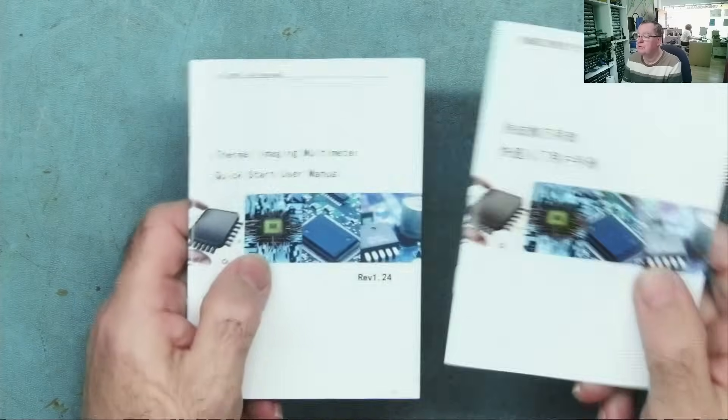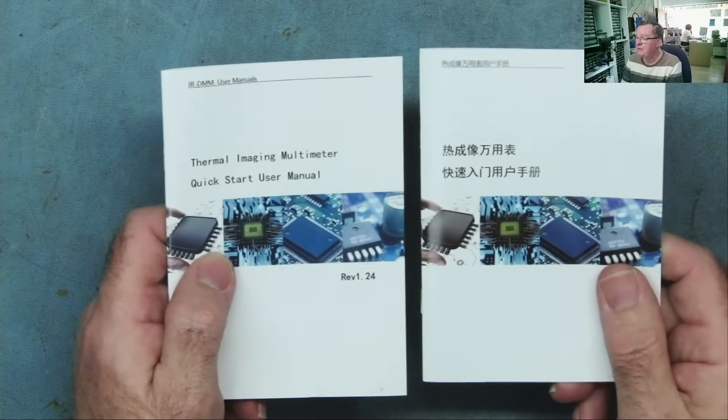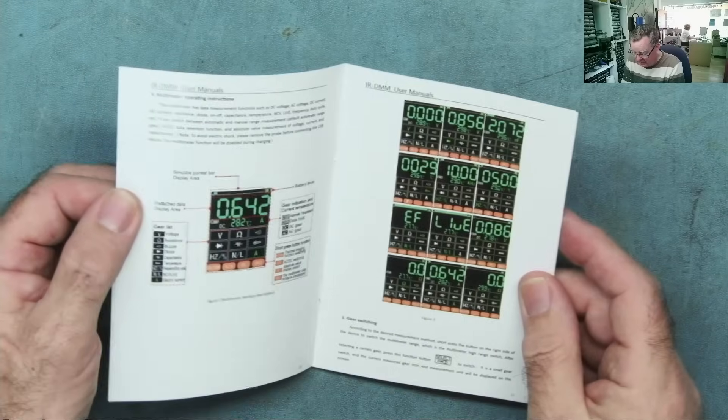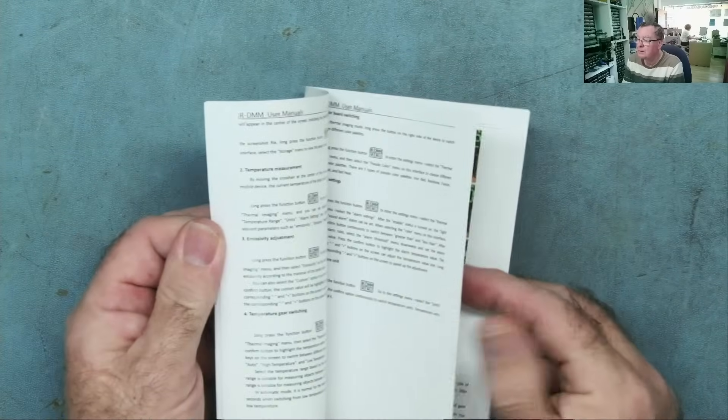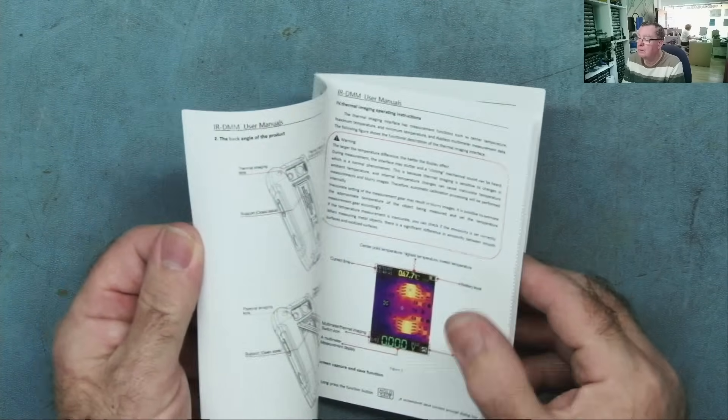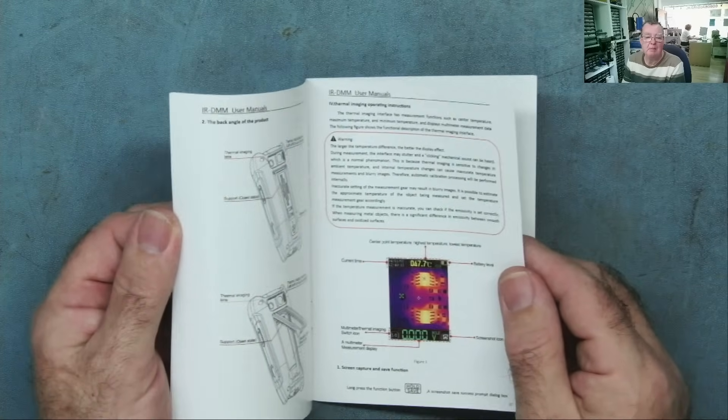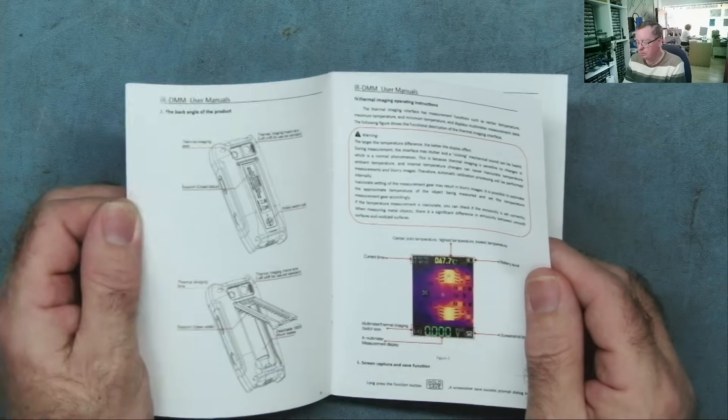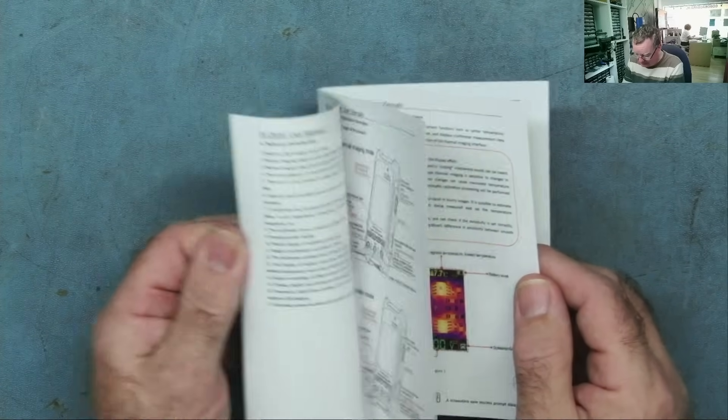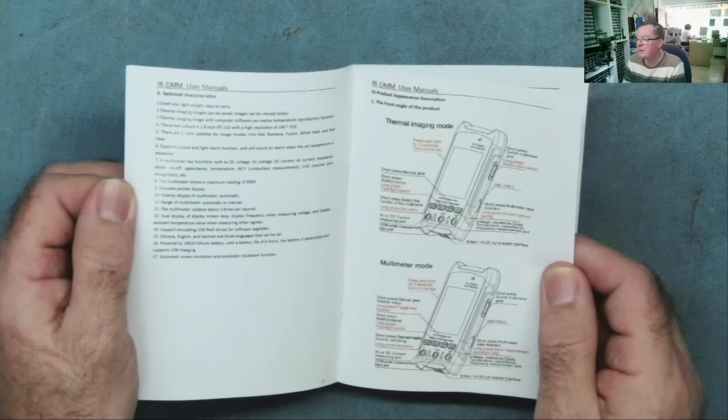In the box, I have two manuals, one English, one Chinese. I think we'll use this one. This is the quick guide. Thermal camera multimeter. I think I should know enough about these sort of devices, so let's see if we can just work this intuitively.